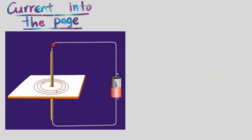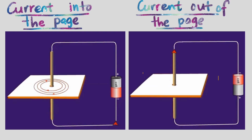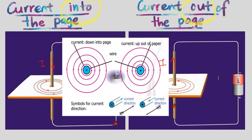If we reverse the polarity of the dry cell so that the current flows in the opposite direction, we can see that the magnetic field lines go in the anti-clockwise direction. The symbols X and dot are used to show the direction of current when viewing from the top of the conductor. The current going down means current into the page, shown by X, and current going up means out of the page, shown by a dot symbol.